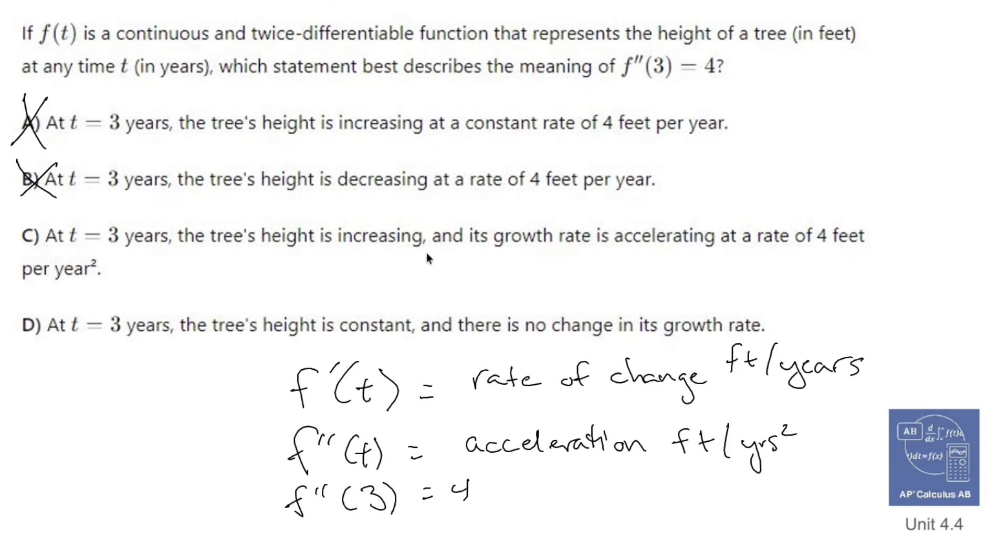At t equals 3 years, the tree's height is increasing, which is true, and the growth rate is accelerating at a rate of 4 feet per year squared. That's going to be my guy. The other option is that t equals 3 years, the tree's height is constant. That's not true at all.